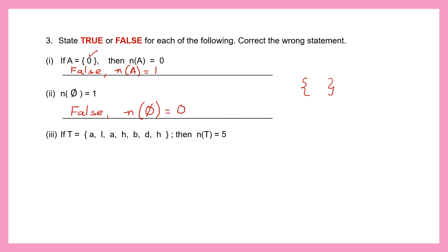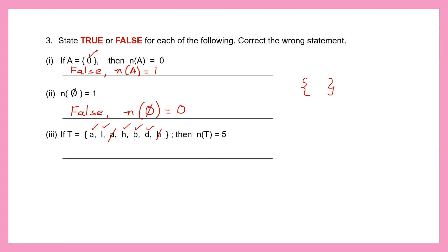Statement 3: If set T = {A, L, A, H, B, D, H} then the cardinal number of set T is 5. Let's check — remember we cannot repeat letters. So: A, L, A again (cancel), H, B, D, H again (cancel). Counting the unique elements: 1, 2, 3, 4 and 5. So the cardinal number of set T is 5. This statement is true.